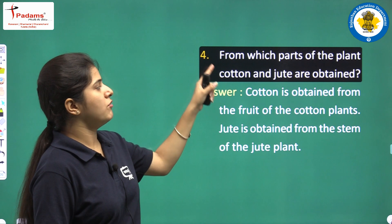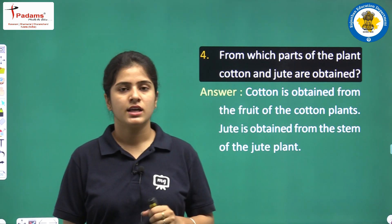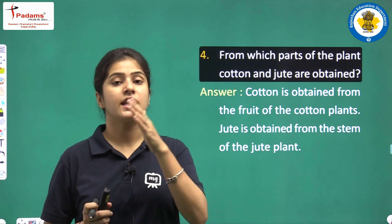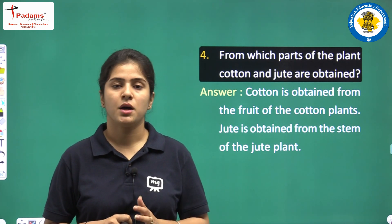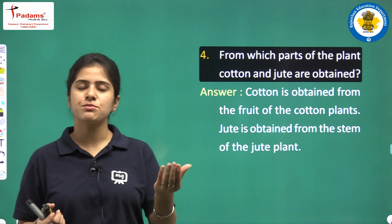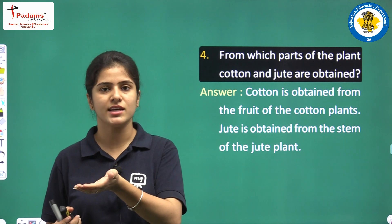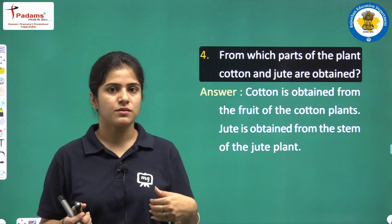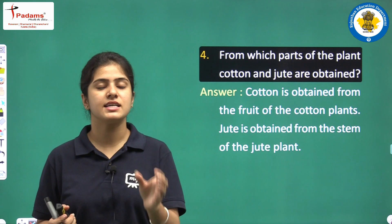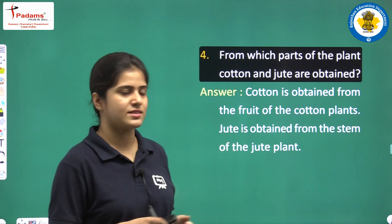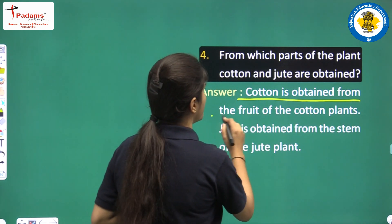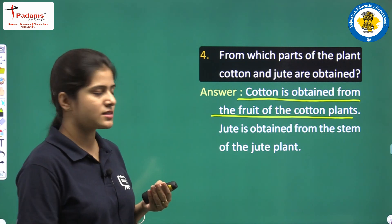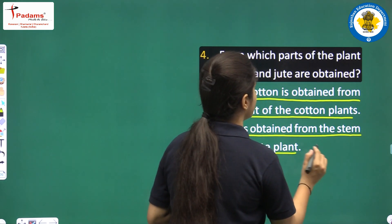Next question: From which parts of the plant are cotton and jute obtained? We know cotton and jute come from plants, but from which specific parts? We get cotton from cotton bolls, which are basically the fruits of the cotton plant. So cotton is obtained from the fruit of the cotton plant. And jute is obtained from the stem of the jute plant.